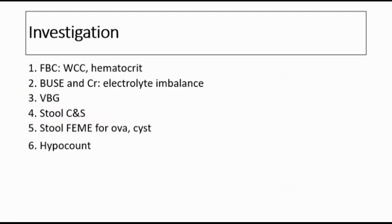For investigations, we can do a full blood count — a high white cell count suggests infection, and hematocrit may be elevated due to hemoconcentration from diarrhea. We can do BUE and creatinine to check for electrolyte imbalances such as hypo- or hypernatremia, hypokalemia, and hypochloremia; urea and creatinine will also be high in severe dehydration. Venous blood gas (VBG) analysis can look for metabolic acidosis. Stool culture and sensitivity is done to detect causative bacteria, and stool microscopic examination is done to look for ova or cysts to detect parasitic infection.